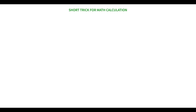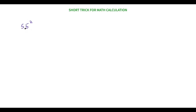The first trick is how to find the square of a number when it has a five in the ones place. For example, 55. This trick works for any number with five in the ones place — say 55, 75, 95, or any number which ends with five.